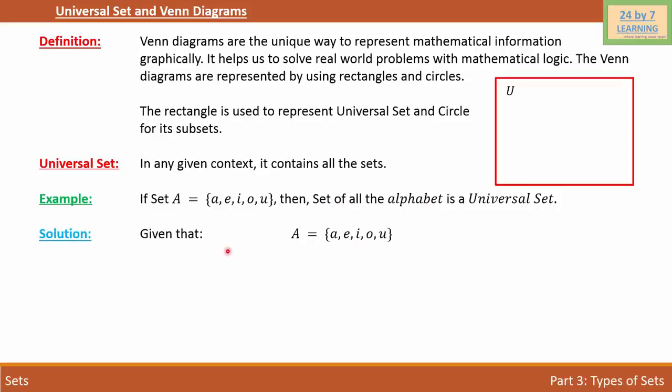As you can see, set A is given as {a, e, i, o, u}, which is basically the set of vowels. As we know, the alphabet does not contain only vowels. The alphabet has more than vowels, which is basically a combination of vowels and consonants.